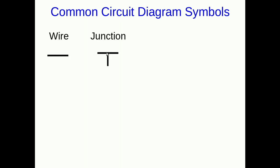Where wires branch at a junction, you just have lines meeting. A battery is represented this way — there's a lot of variation in how people represent batteries, but this is a pretty typical one. By convention, the long line on the top is the positive terminal of the battery, and the short line is the negative terminal.